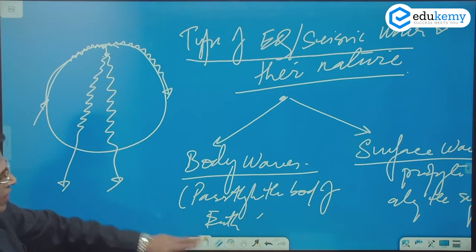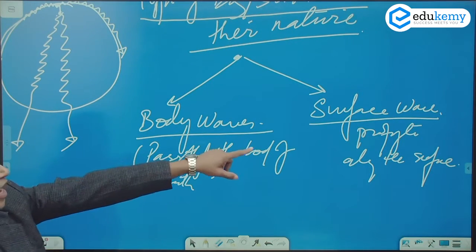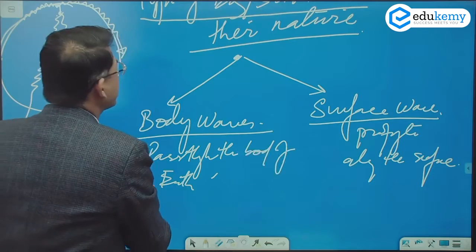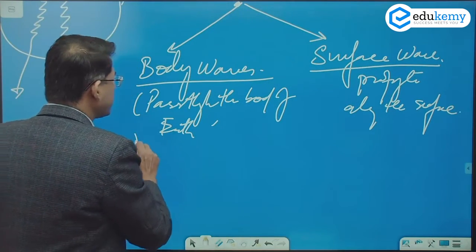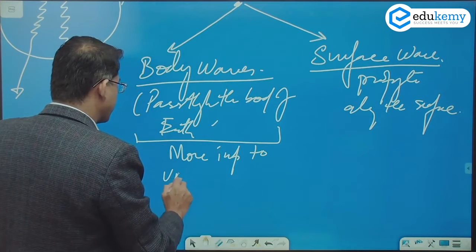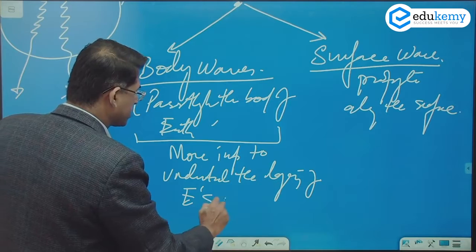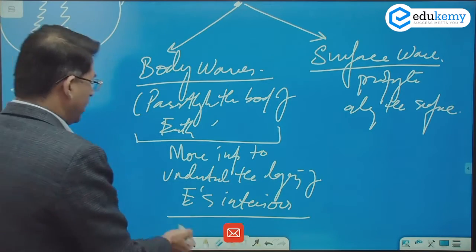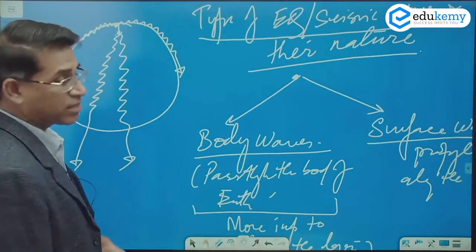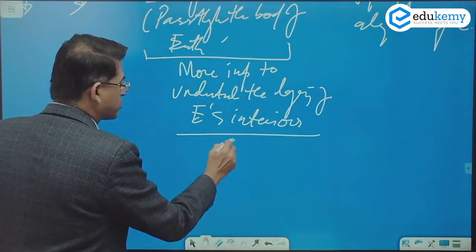Body waves pass through the body of the earth and surface waves pass through the surface of the earth. Body waves are more important for understanding the layering of Earth's interior. If I want to know Earth's interior, I would study the waves that pass through the interiors. Body waves are of two types.